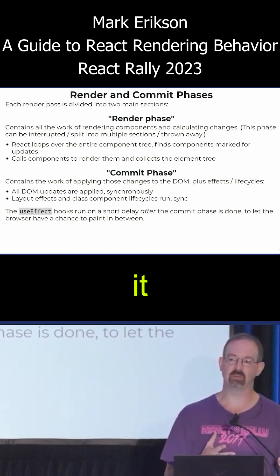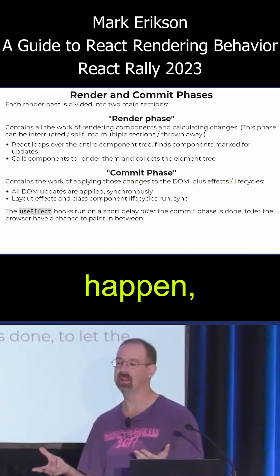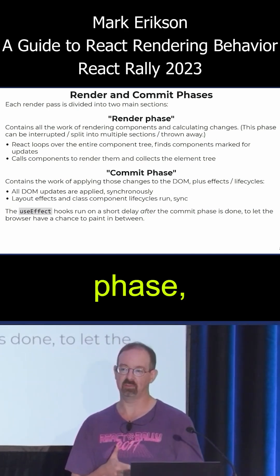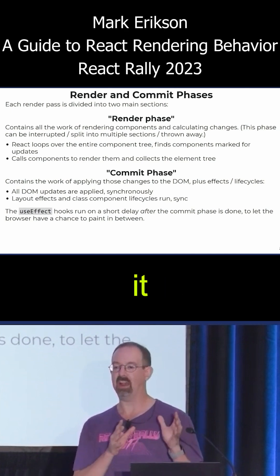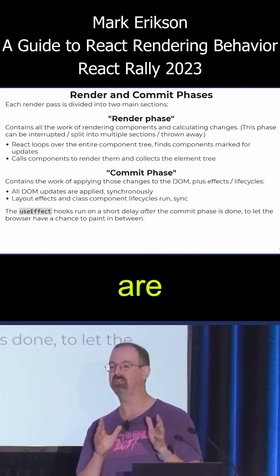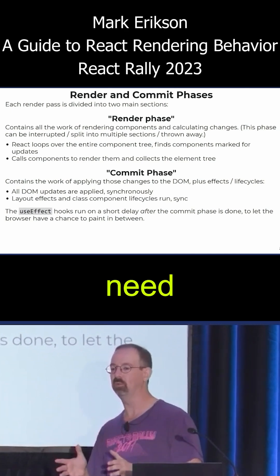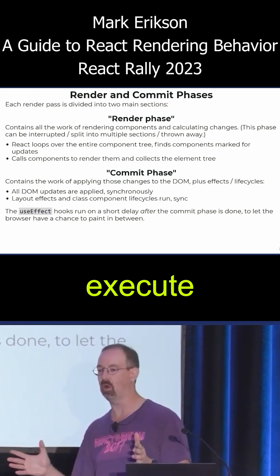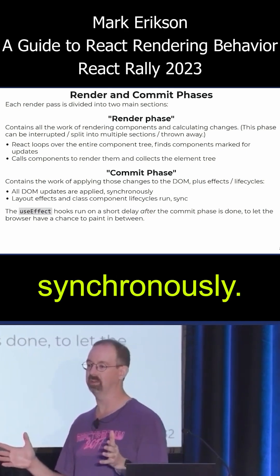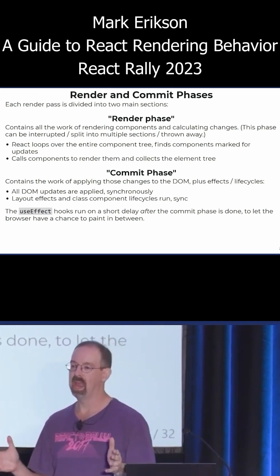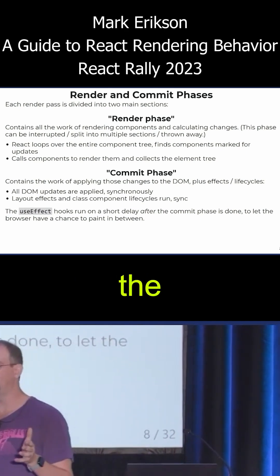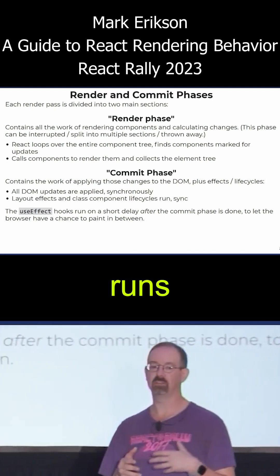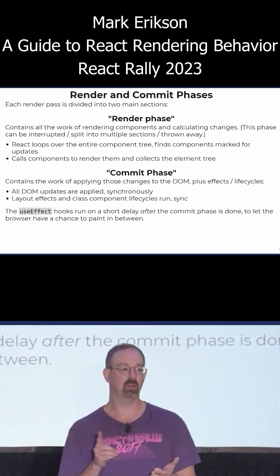Once it actually knows what changes need to happen, it goes through the commit phase where it knows here are the changes we need to apply to the DOM, and executes all of those synchronously. At the end of the commit phase, React then runs some of the lifecycle methods.